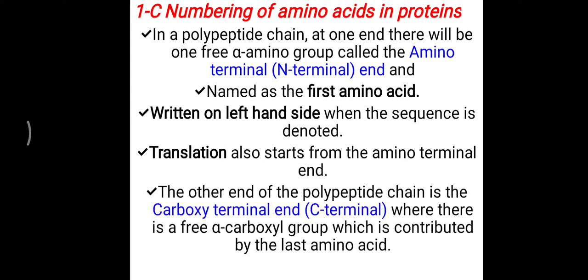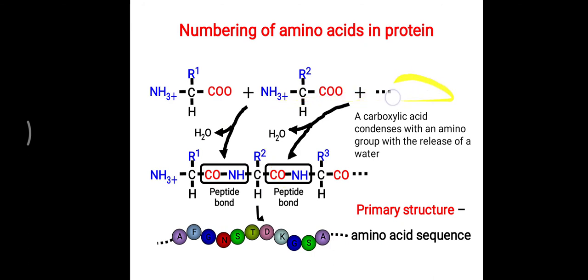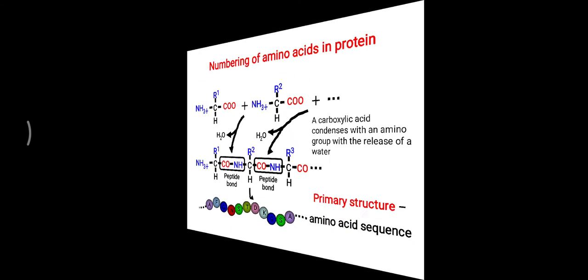The opposite side of the protein chain shows the carboxy terminal — called C-terminal — where there is a free alpha-carboxylic group contributed by the last amino acid. N-terminal is on the left-hand side and C-terminal is on the right-hand side. This sequence of the particular amino acid chain is called the primary structure of the protein.